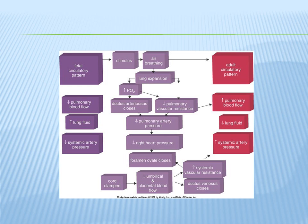What would happen if PaO2 did not increase? If PaO2 did not increase, the ductus arteriosus would not be able to close and pulmonary vascular resistance would not decrease as much as it should. We'd have persistent fetal circulation with high right heart pressures because the pulmonary vessels wouldn't be able to vasodilate — they'd remain constricted due to absent PaO2 increase.